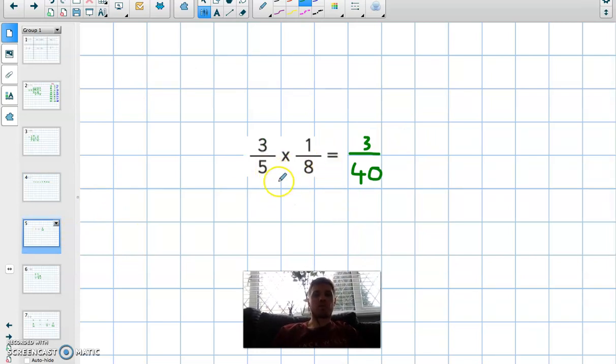Okay, multiplying two fractions. When we multiply two fractions we start off by multiplying the two numerators together first, the top numbers. 3 multiplied by 1 is 3. And then we do the denominators, so 5 multiplied by 8 is 40. So 3 over 40 is your answer.